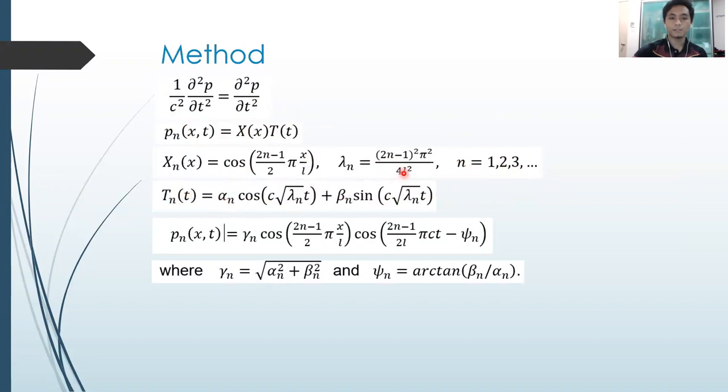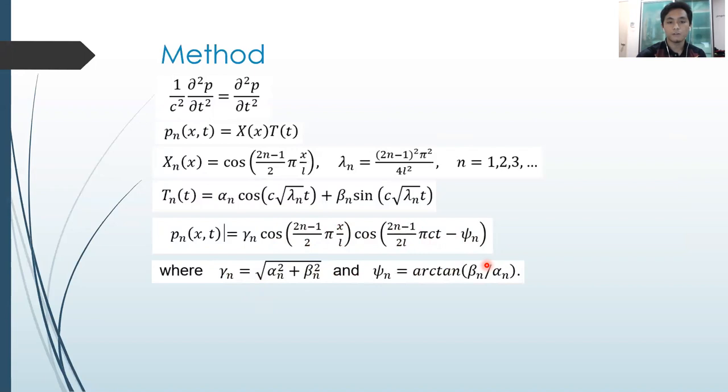Substituting all of this with each other, we will have the pressure equation equal to gamma n cosine (n minus 1) times pi times x divided by L, times cosine (n minus 1) over 2L pi Ct minus psi n, where gamma is equal to square root of a squared plus b squared, and psi is equal to arctangent of beta over alpha. So this is for the first requirement. We have the normal modes of the pressure.